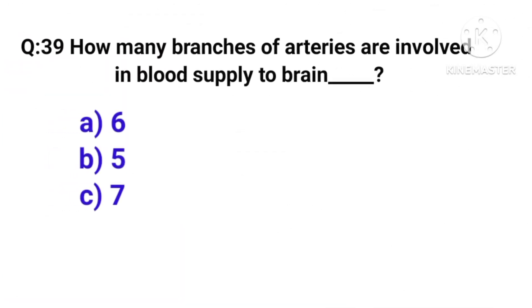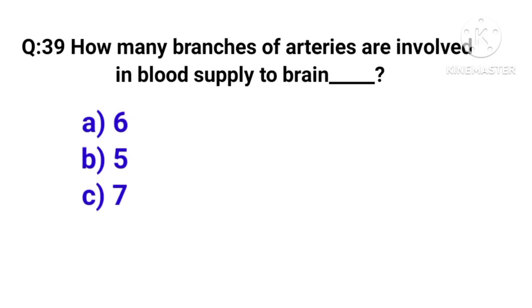Question number 39: how many branches of arteries are involved in the blood supply to the brain? Correct answer is option A — 6.